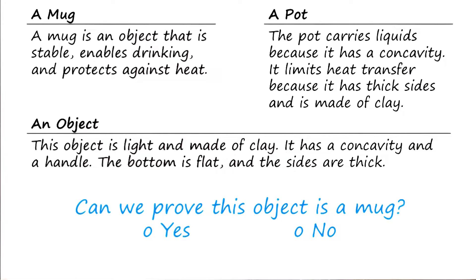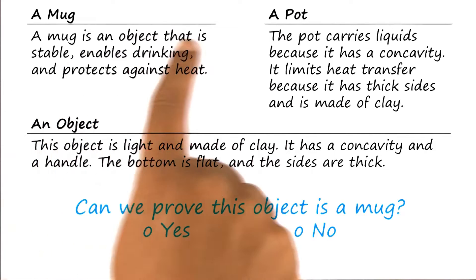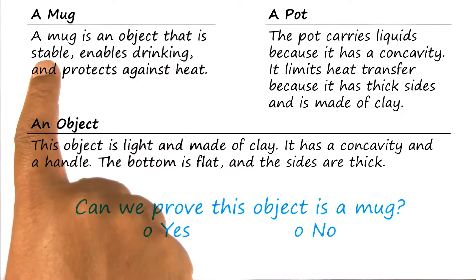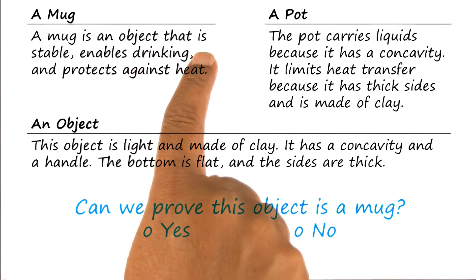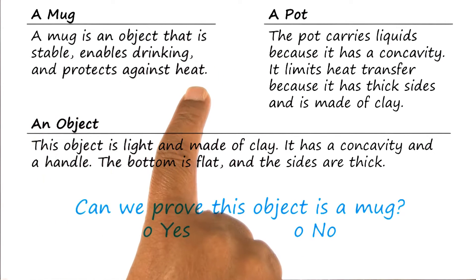Let us do an exercise together. This time, instead of showing that an object is an instance of a cup, we are going to try to show that an object is an instance of a mug. Here is the definition of a mug: a mug is an object that is stable, enables drinking, and protects against heat.